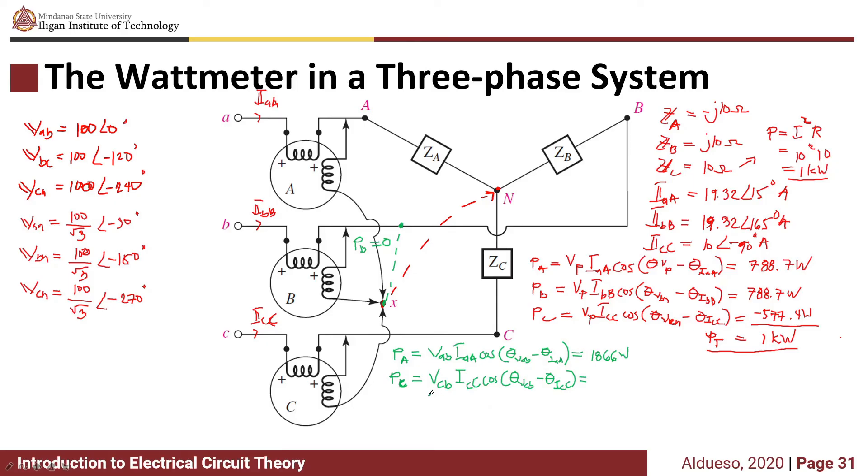Remember, VCB is the negative of VBC. We have -806 watts, giving us a total of 1,000 watts or 1 kilowatt.